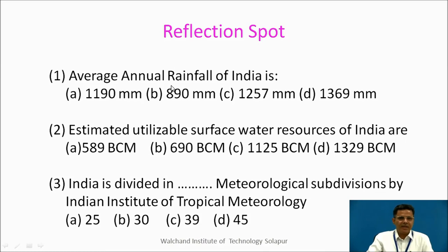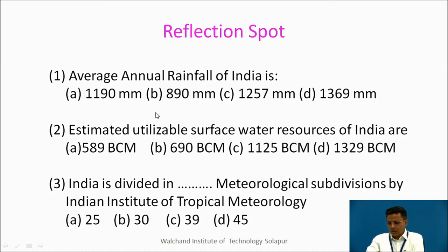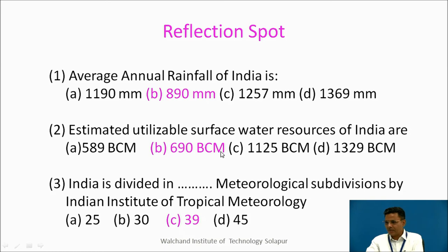Reflection spot: The average annual rainfall of India is 890 millimeters. The estimated utilizable surface water resources of India are 690 billion cubic meters. India is divided into 13.9 meteorological subdivisions by the Indian Institute of Tropical Meteorology.